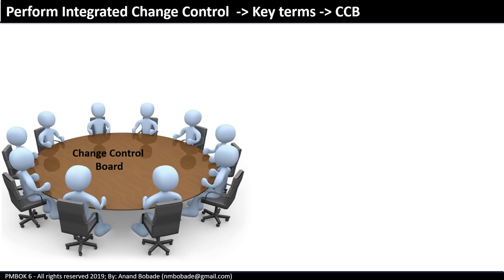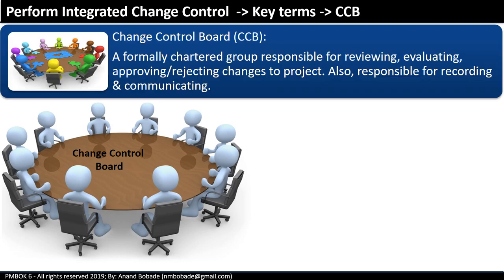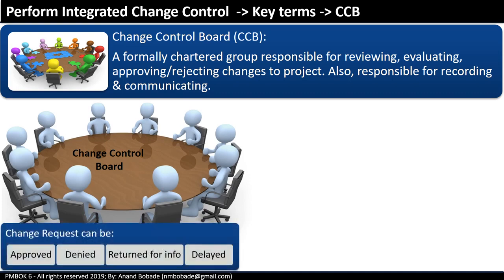What is the change control board? The CCB is a group responsible for reviewing, evaluating, approving, or rejecting changes to the project. They are also responsible for recording and communicating decisions. Change requests can be approved, denied, returned requesting more information, or sometimes delayed or put on hold. The most debated question is: who approves a change request — is it the project manager, the sponsor? The correct answer is the change control board.